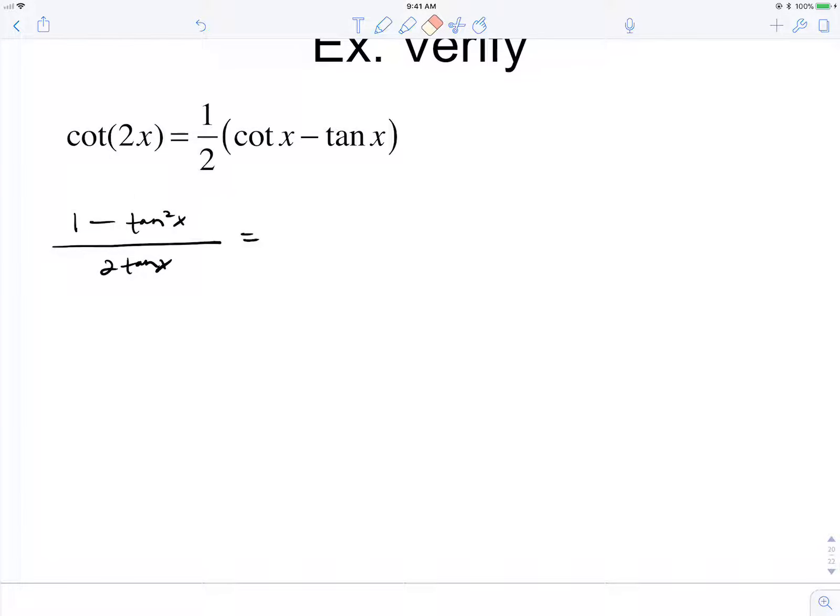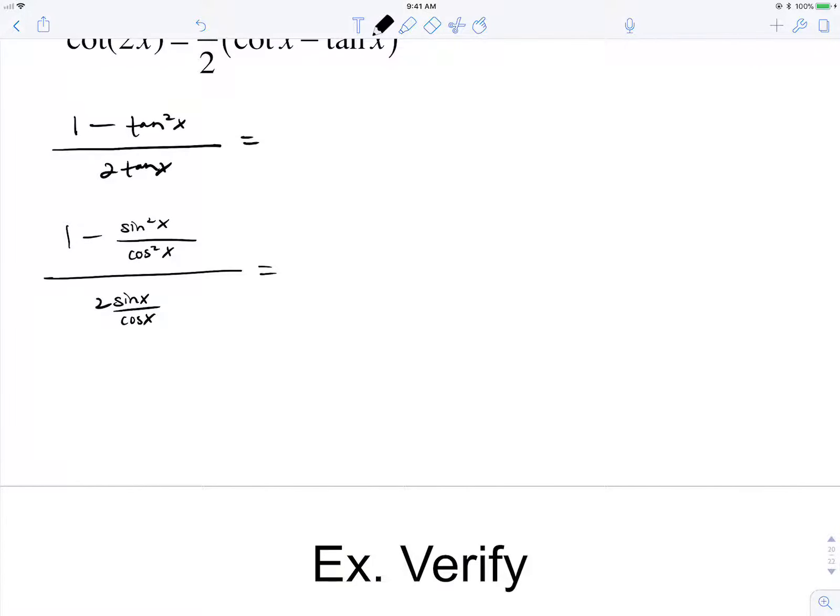I could change this to be 1 minus sine squared over cosine squared. And then if I wanted to multiply by cosine squared over cosine squared. I just did this yesterday and I'm having a brain fart. So this will be cosine squared minus sine squared over 2 sine times cosine.